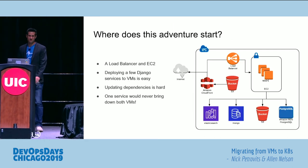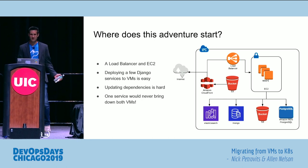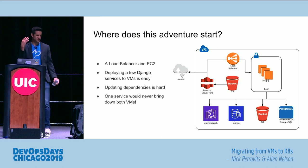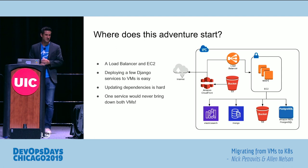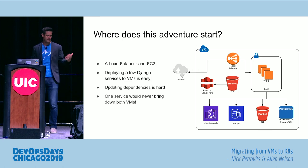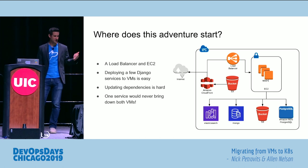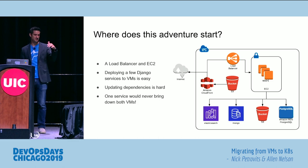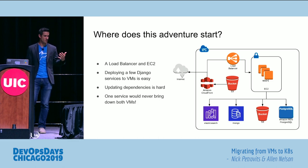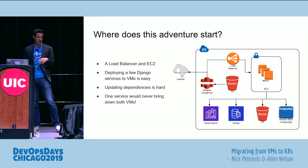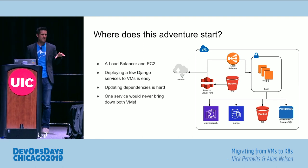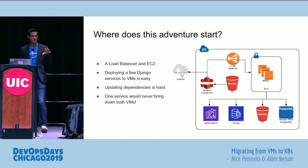So where does our adventure start and why did we want to talk to you about this today? This is a simplified version of our architecture — we've ripped out things like web application firewalls just to make the picture look simple. We have a software as a service application that helps market researchers do some research. We have a load balancer that sits in front of some EC2 instances. We serve all of our web content in S3 fronted by CloudFront, and our web apps talk to Elasticsearch, Mongo, and other typical things. In this talk, we're going to focus only on the stuff that's in EC2 and how to migrate that to Kubernetes.